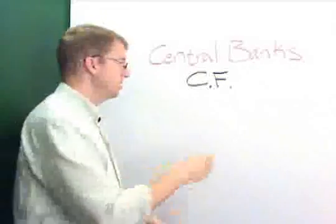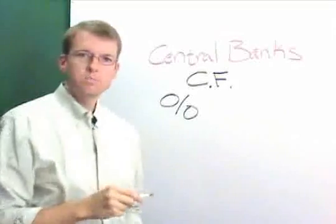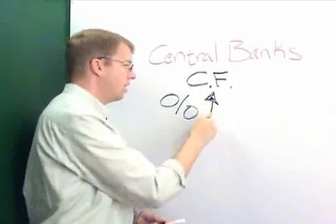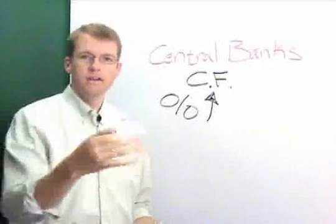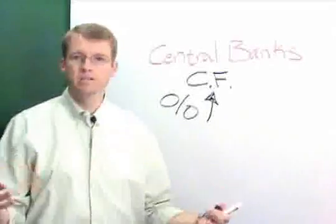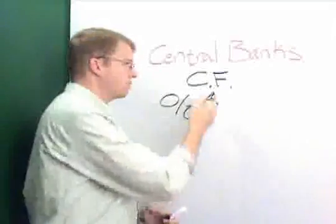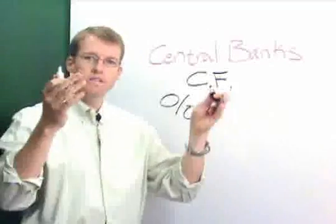If a central bank wants to push interest rates up, what they're essentially doing is they are slowing the rate of inflation of their currency. So they're always basically inflating their currency but they're slowing that rate. Well that's going to constrict the supply of money a little bit and that drives interest rates or yields up because competition for that cash is increased.